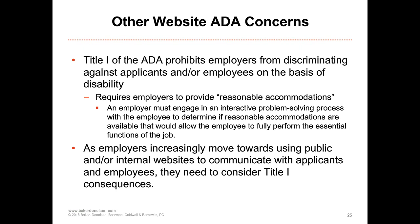Those reasonable accommodations are required unless you are able to show what's referred to as an undue burden, which is an extremely stringently high standard. It takes into account whether trying to accommodate applicants would be so financially draining on your organization that it could threaten it. The larger your organization, the harder it is to make an undue burden argument. Even a mom-and-pop organization that allows people to apply online will be expected to exhaust all nonprofit or free offerings available before making an undue burden argument.